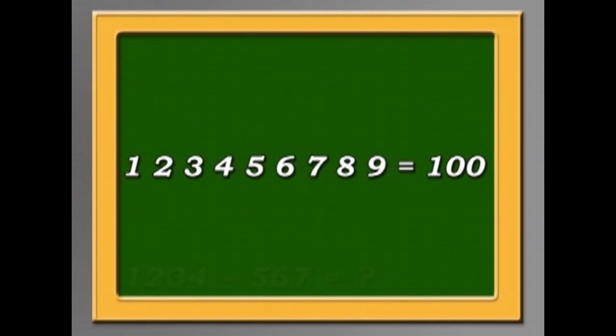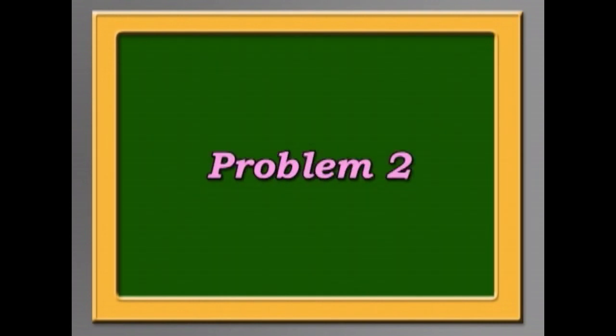But you can make 1, 2, 3, 4, 5, 6, 7, 8, 9 equal 100 using only three signs. Two pluses and a minus, or two minuses and a plus. Have fun and work it out. Problem 2.